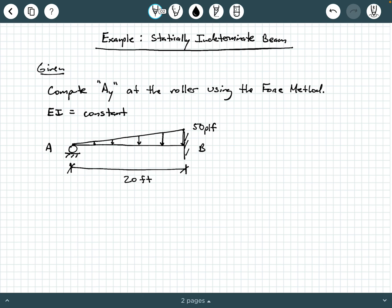So let's take a look at what we're given. We are being asked to compute AY, the vertical reaction at A at the roller using the force method. And then we're being told that the flexural rigidity, which is EI, the product of E times I, is constant for this beam. So what we have here is a propped cantilever beam, and that's one where one end is propped up by a roller and the opposite end is a fixed connection. This beam is 20 feet long, and it is supporting a linearly increasing load that starts at 0 at the roller at A and increases to 50 PLF at the fixed connection at B.